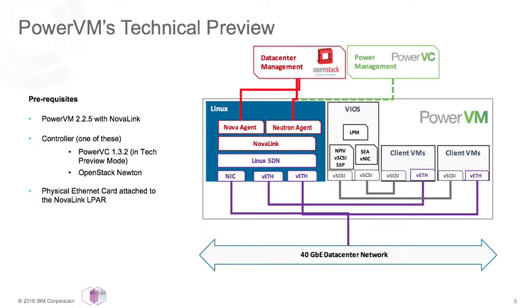PowerVM uses OpenVSwitch as the programmable virtual switch. It sits on top of the physical Ethernet port or ports on the NovaLink LPAR. Each virtual Ethernet adapter on each LPAR will have a point-to-point connection between it and the OpenVSwitch. The SDN controller, such as PowerVC, manages all of the virtual networking in the system and puts rules on the system that get compiled down for OpenVSwitch to enforce. We've also been focused on building on open technologies — industry standard elements such as OpenStack and OpenVSwitch. PowerVC, being built on OpenStack, takes advantage of this enablement within OpenStack itself.